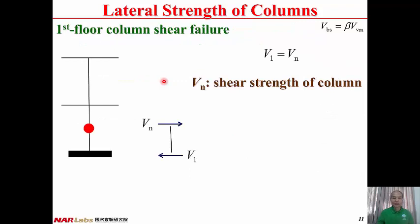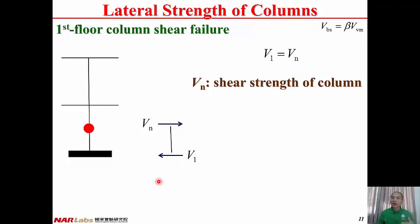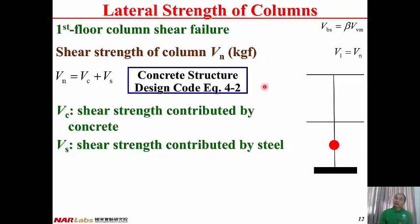Considering failure mode 1 — shear failure of the first floor column — Vn is the shear strength of the column. From the free body diagram, using force equilibrium, V1 equals Vn. That means the lateral strength of the column line under failure mode 1 equals Vn. From the concrete structure design code equation 4-2, Vn equals the sum of Vc (shear strength contributed by concrete) and Vs (shear strength contributed by steel).